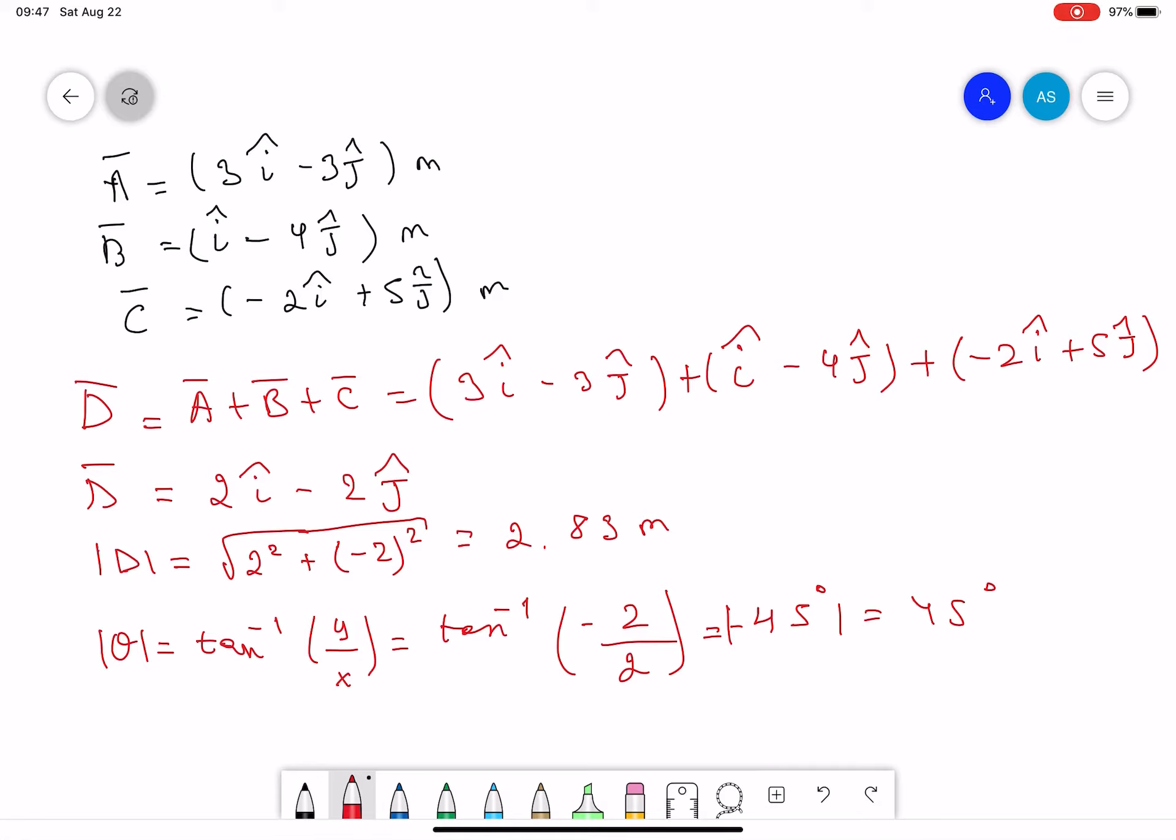But since we want to find the angle from the positive x direction, we have to find it as alpha equals 360 minus 45, which gives you 315 degrees.